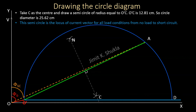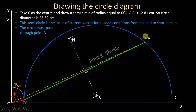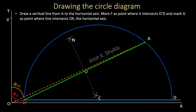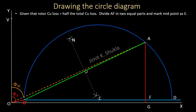This semicircle is the locus of the current vector for all load conditions from no load to short circuit for the induction motor. We must verify that the circle passes through point A. If it does not, there is a measurement or drawing error. We then draw a vertical line from A to the horizontal axis, marking point F where it intersects O'D and point G where it meets horizontal axis OX.